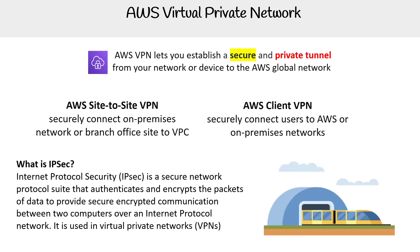One thing I'd like to cover is IPSec, because there's not really anywhere else to talk about it. IPSec, which stands for Internet Protocol Security, is a secure network protocol suite that authenticates and encrypts packets of data to provide secure encrypted communication between two computers over an IP network. It is used in VPNs, so if you're using VPNs, you're going to get that secure connection — and that's the reason why you need VPNs.